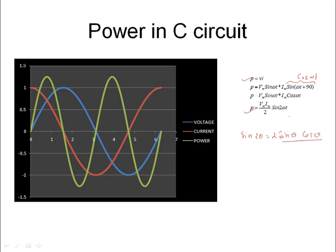Unlike the inductor case which had a minus sign, here the power expression has a plus sign. The voltage waveform (blue), current waveform (red), and power waveform (green) are shown. At instants where both current and voltage waveforms are at zero, the power is also zero. At certain instants the waveforms cross zero in the same way.